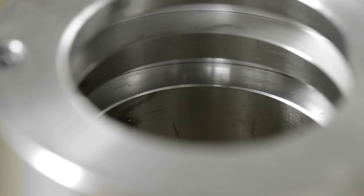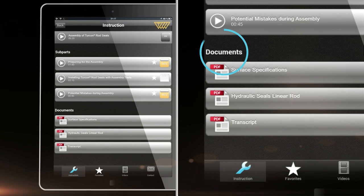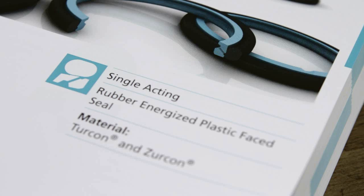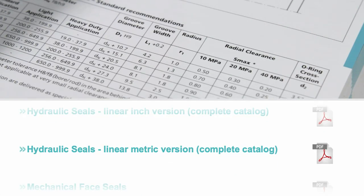The surfaces and dimensions of the grooves and the rod should be finished according to Trelleborg Sealing Solutions specifications. See surface specifications in the app and groove dimensions in the hydraulic seal's linear catalog or on the Trelleborg Sealing Solutions homepage.